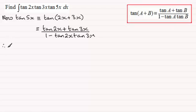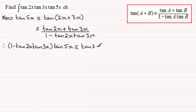So therefore we end up with 1 minus tan 2x, tan 3x. And this is all multiplied by the tan of 5x. And that's going to leave me with the right hand side, the numerator here on the right hand side, tan 2x plus tan 3x.